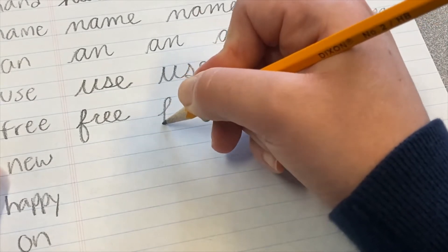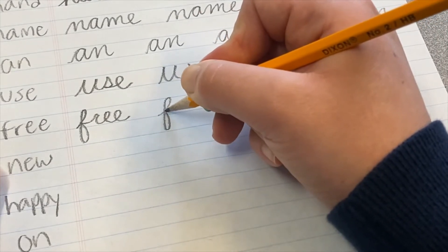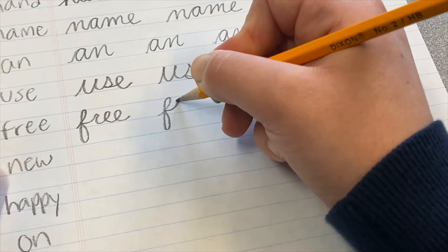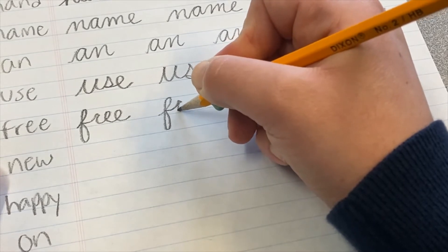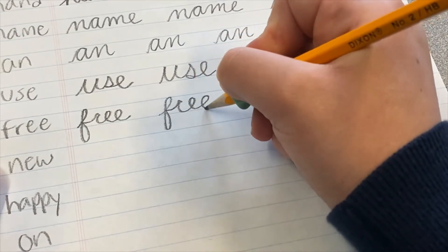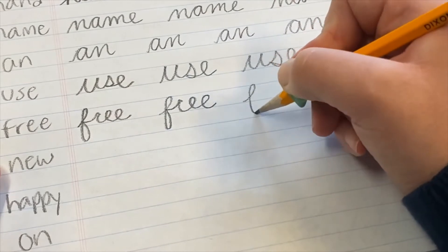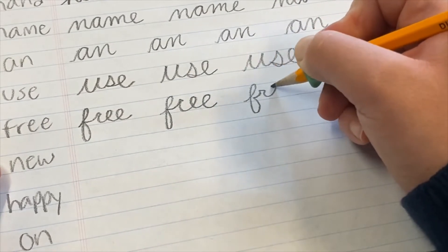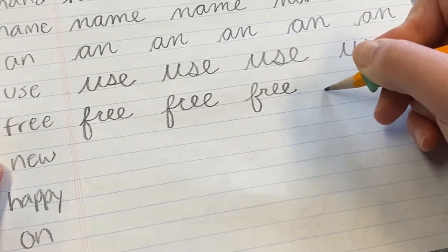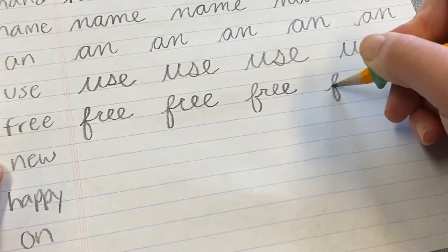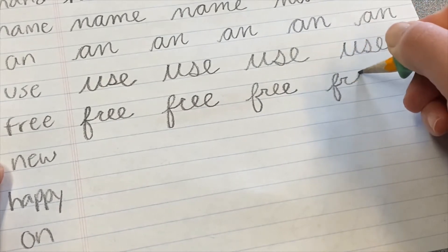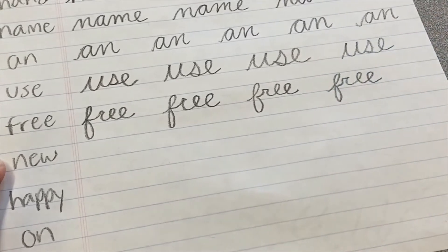That's the word free. F loop up, F loop down, in, and then we'll go R, E, E. F, R, E, E.